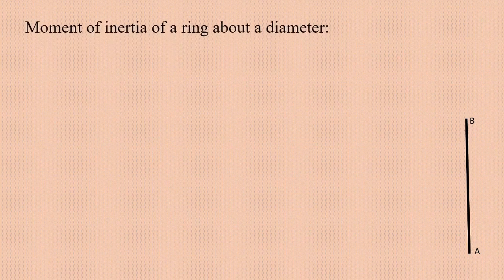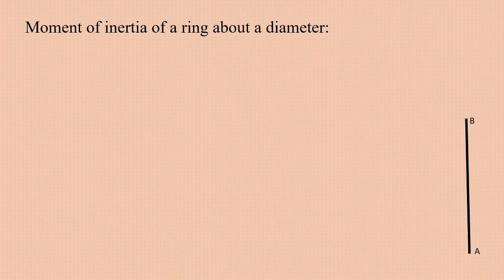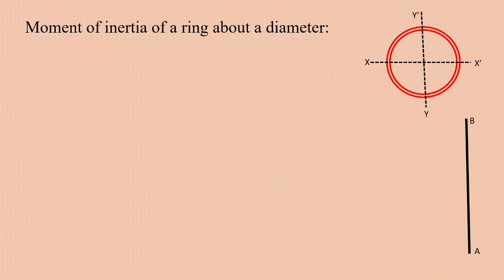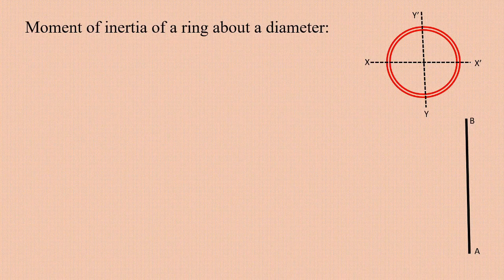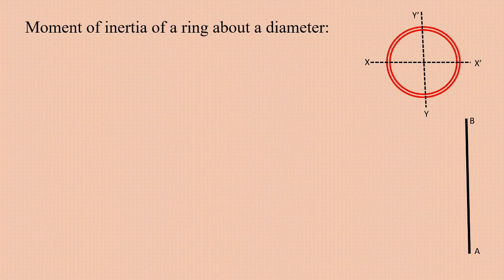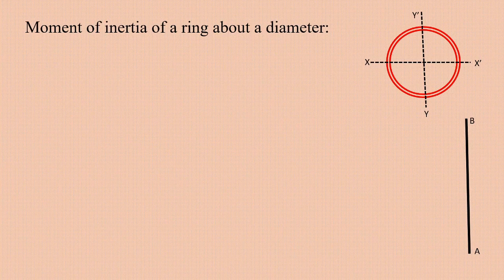Now we are going to find the moment of inertia of the ring about a given diameter. We have the ring with two axes, YY' and XX', both lying along the diameters. In order to find the moment of inertia of the ring about any diameter, we are going to use the perpendicular axis theorem.